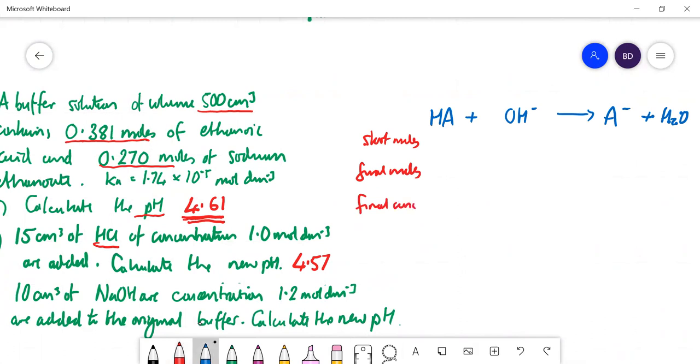So HA we're starting off with 0.381. A- we're starting off with 0.27. So it's very similar to the hard buffer type calculations, but usually we start off with 0 A- there. We've got a little bit of A- to start off with. So moles of NaOH, which is of course the same as the moles of OH-, is going to be the concentration times by the volume. The concentration is 1.2 moles per decimeter cubed and the volume is 0.01. So that is equal to 0.012.